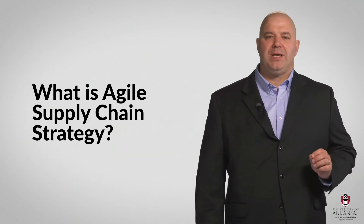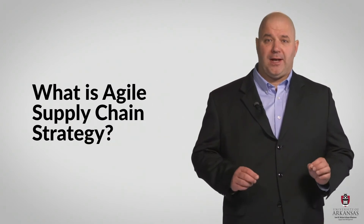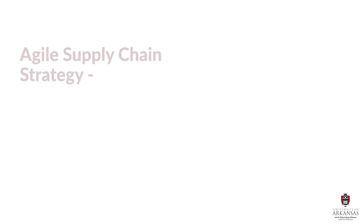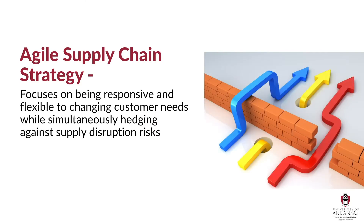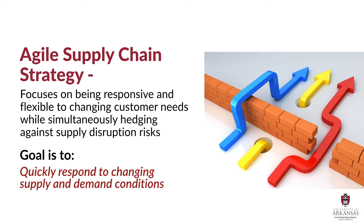What is agility? That's a term I usually hear when people talk about athletes. In an athletic context, agility refers to the ability to move quickly and easily. And that idea of quick and easy movement translates well into business, especially in supply chain management. An agile supply chain strategy focuses on being responsive and flexible to changing customer needs while simultaneously hedging against supply disruption risks. Or said another way, supply chain agility comes down to quickly responding to changing supply and demand conditions.